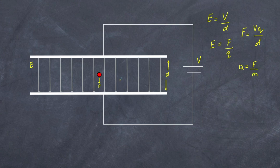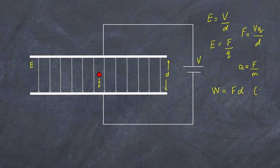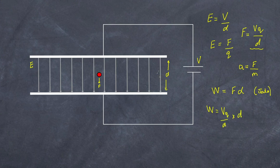Now let's talk about work. Work is done when you apply a force over a certain displacement — work equals force multiplied by distance, measured in joules. If we substitute in the force formula VQ/D and multiply by the distance D, we simply get work equals VQ.